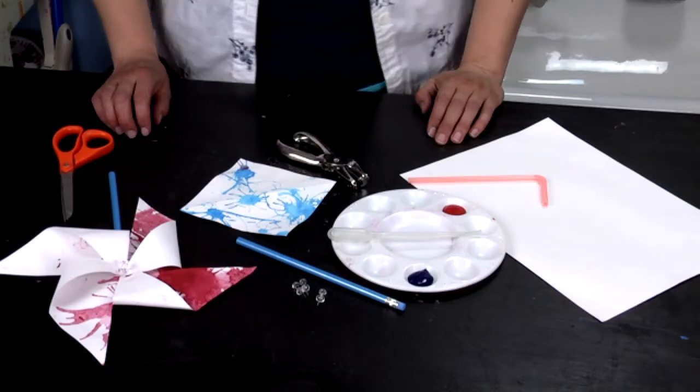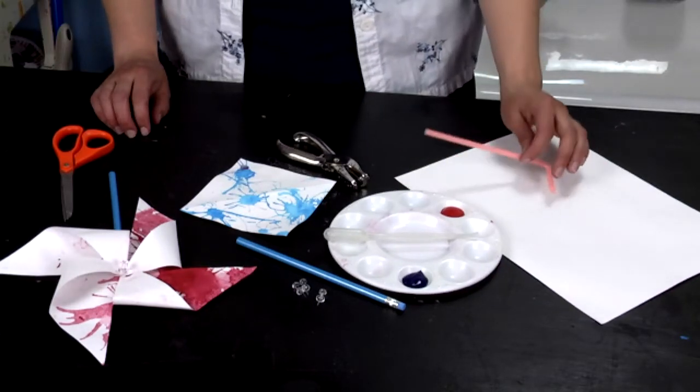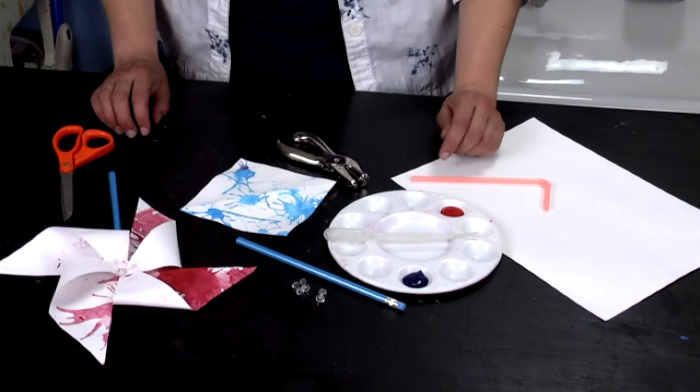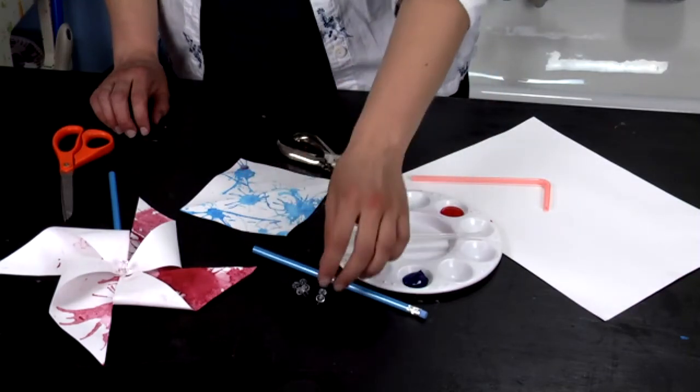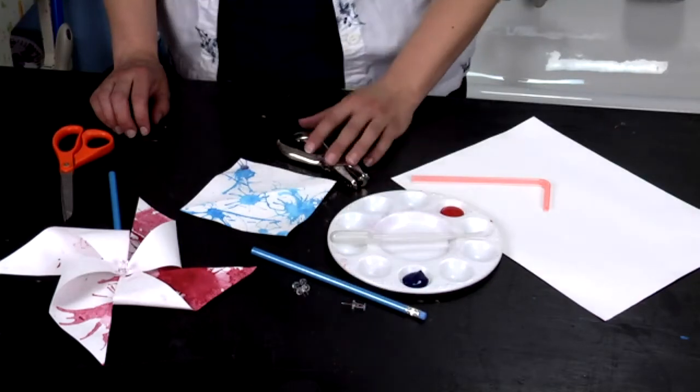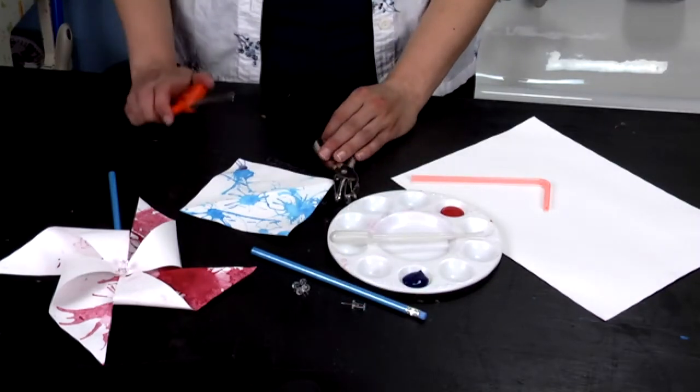To make patriotic pinwheels, what you're going to need is some paper, straw, red and blue paint, some water, a blue pencil, some push pins, a hole puncher, and some scissors.